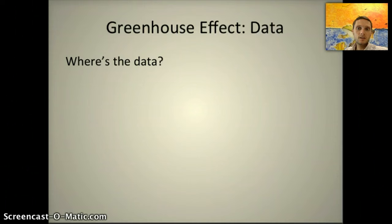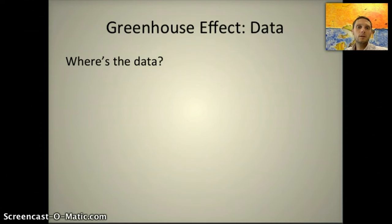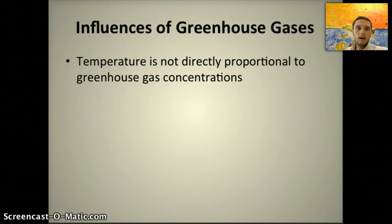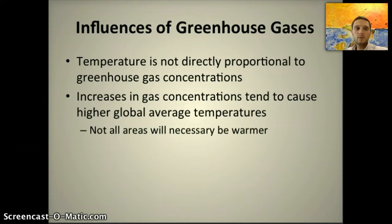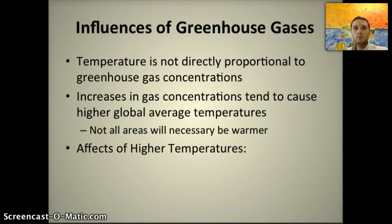What all this is showing us is that there's a correlation between carbon dioxide and temperature. As the amount of carbon dioxide and other greenhouse gases in the atmosphere increases, temperature on Earth has also increased. Although temperature is not directly proportional to greenhouse gas concentrations, there does seem to be a connection — increases in gas concentrations tend to cause higher global average temperatures. Not all areas are necessarily going to be warmer, but overall the average for the entire planet does seem to be increasing.